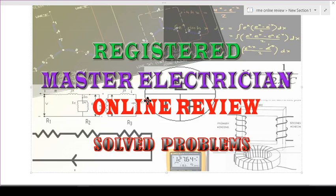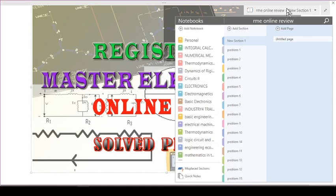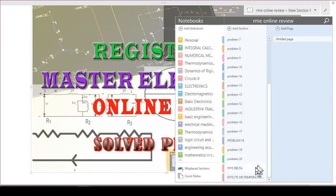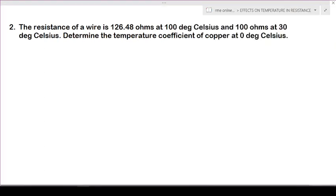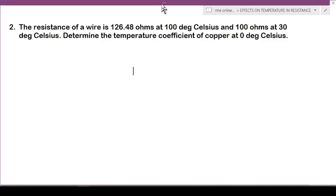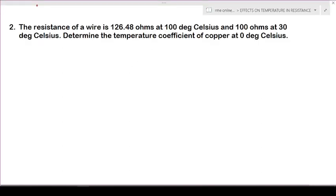Okay, so welcome back to our discussion to solve problems. At this moment I will try to solve another problem which involves the effects of temperature on resistance. So now we have the problem: the resistance of a wire is 126.48 ohms at 100 degrees Celsius and 100 ohms at 30 degrees Celsius. Determine the temperature coefficient of copper at zero degrees Celsius. Let's have our solution.